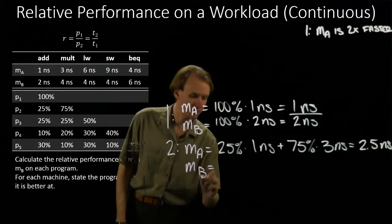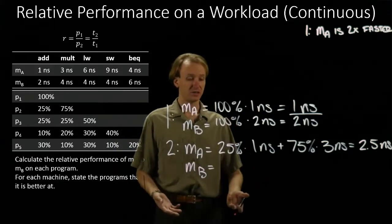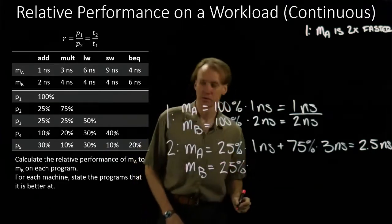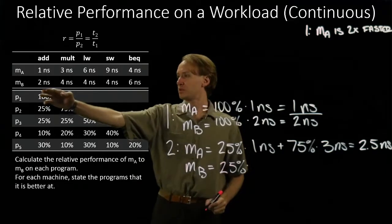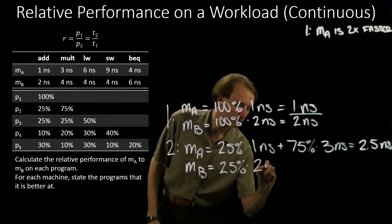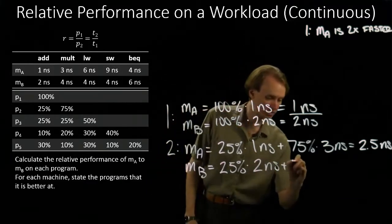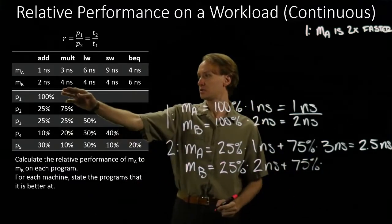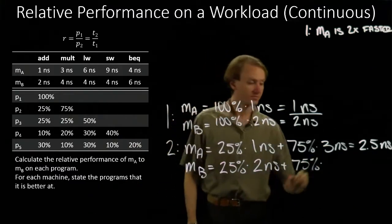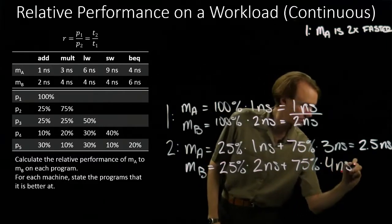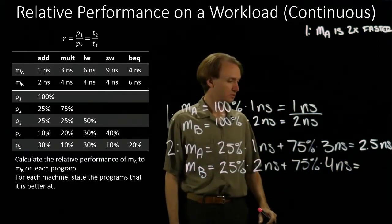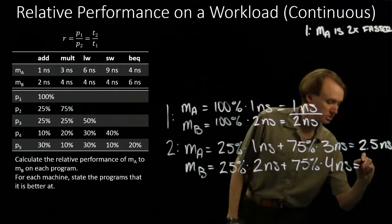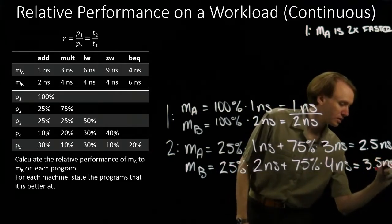For machine B, 25% of the instructions are addition instructions, taking two nanoseconds each. The other 75% are multiply instructions, taking four nanoseconds each. That gives three nanoseconds plus half a nanosecond, which gives 3.5 nanoseconds.